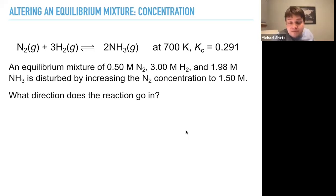So an equilibrium mixture of 0.5 molar nitrogen, 3.0 molar hydrogen, and 1.98 molar ammonia is disturbed by increasing the N₂ concentration to 1.5 molar. This is the same thing we did before.